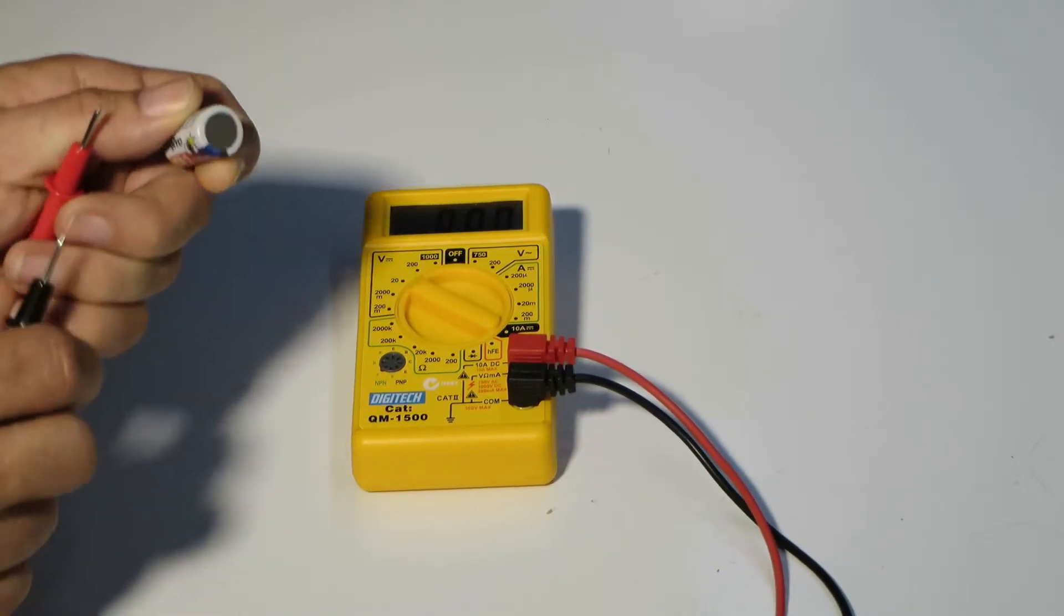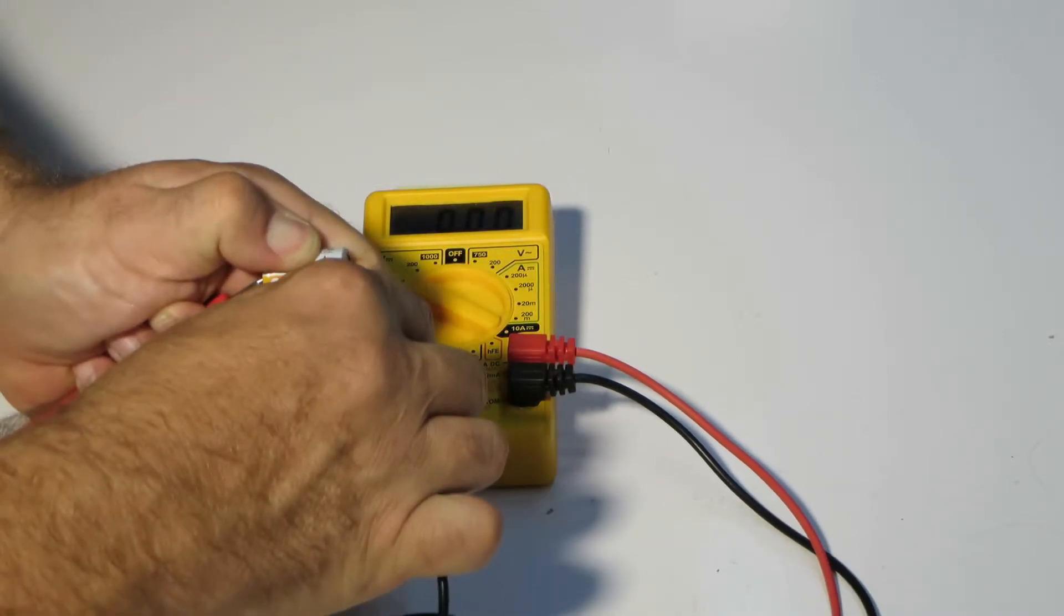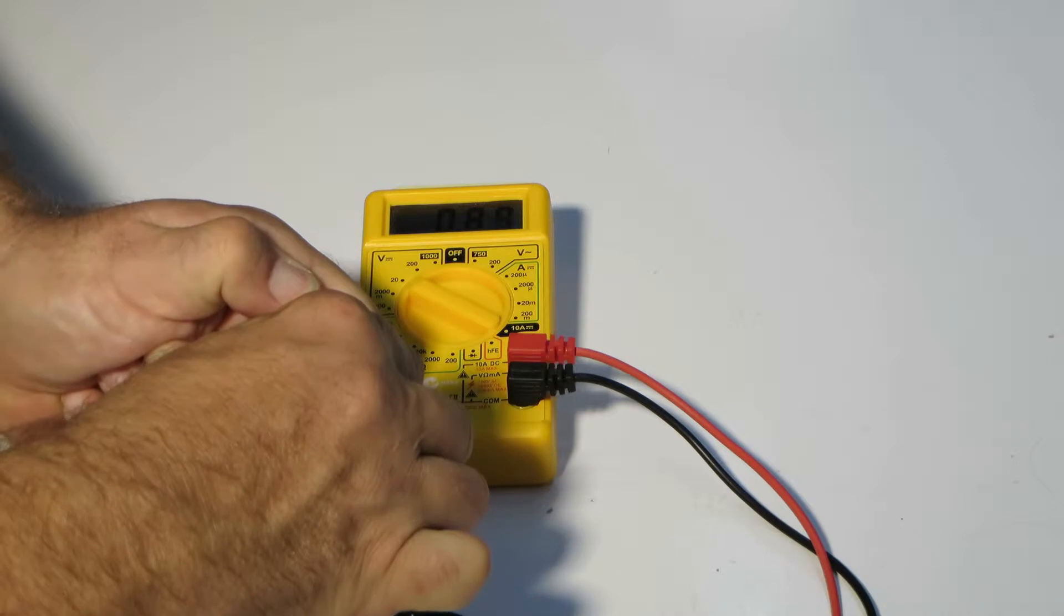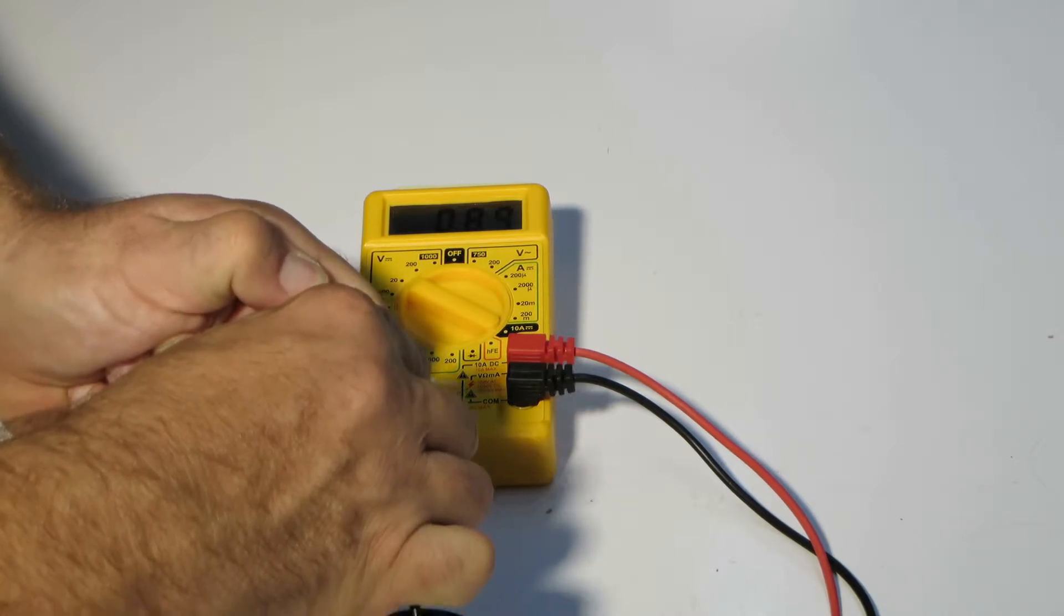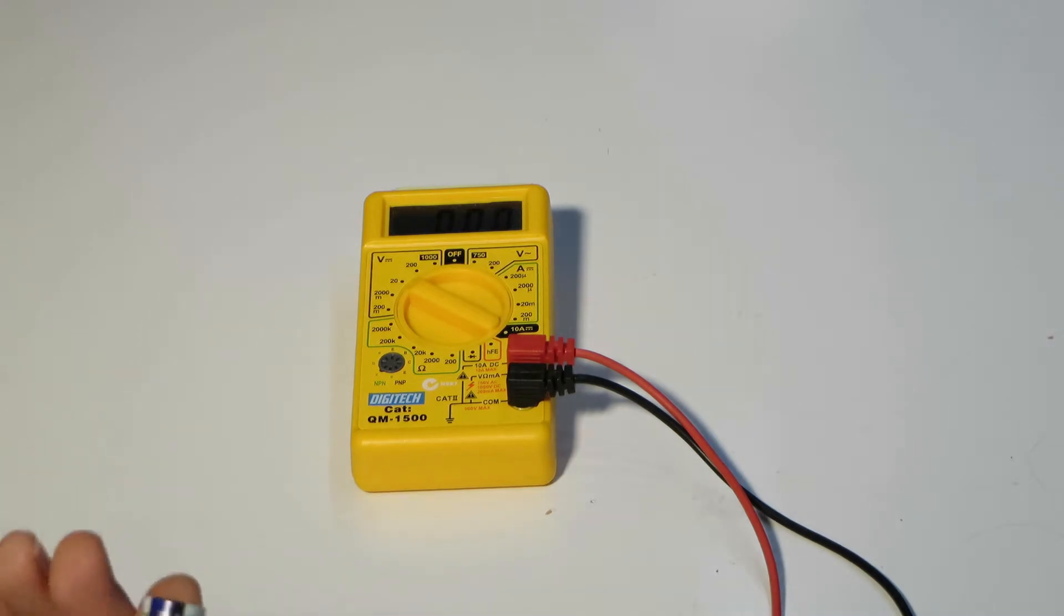Grab the probes. The red one goes onto the positive and the black one onto the negative end. Just under 0.9 volts. So it's a 3 volt battery, it's dead.